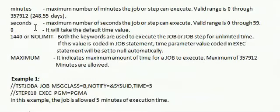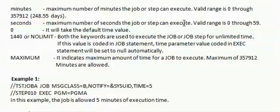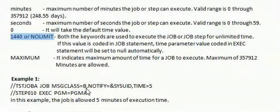Minutes specifies the maximum number of minutes the job or step can execute; the valid range is 0 through 357912. Seconds specifies the maximum number of seconds the job or step can execute, ranging from 0 through 59. If TIME is specified as 0, it takes the default time value. 1440 or NOLIMIT are both used to execute a job or job step for unlimited time. MAXIMUM indicates the maximum amount of time for a job to execute.